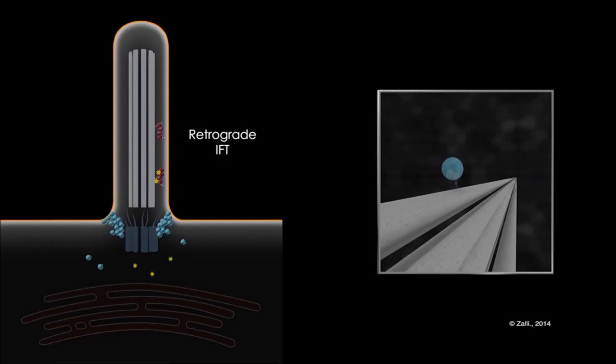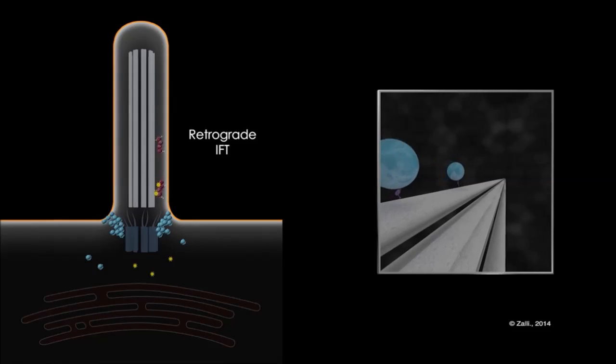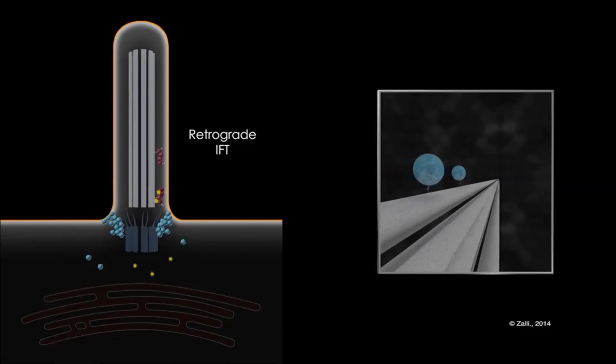And twice as much retrograde particles are transported to the base of the cilia. A lot of cilia research nowadays is focusing to better understand the process of IFT and cilia formation. Many questions remain to be answered. For example, what are the IFT proteins that are transported to the cilia? What is the mechanism of this transportation? How do motor proteins kinesin and dynein work?